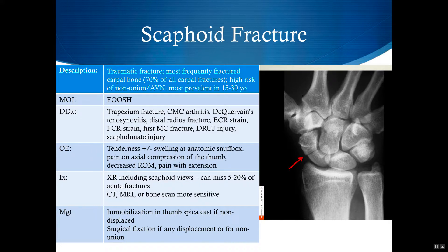If there's tenderness in the anatomic snuff box but initial x-rays are negative, you can immobilize the thumb in a thumb spica cast and repeat the x-rays in two weeks, or you can get advanced imaging like CT or MRI, or you can get a bone scan to rule out a fracture. If there's any displacement or non-union after immobilization, then they should see a surgeon for surgical fixation.